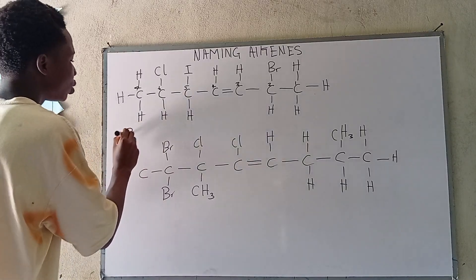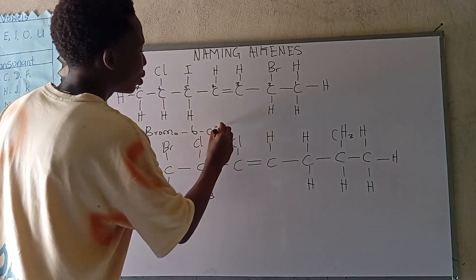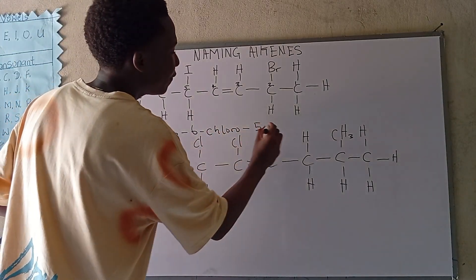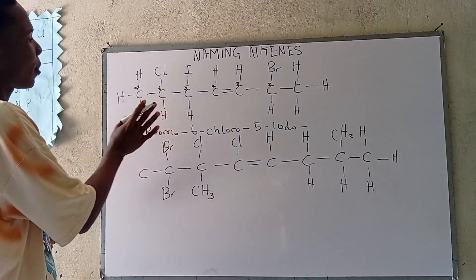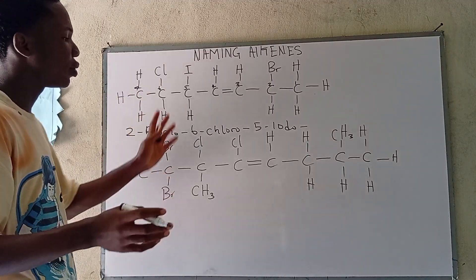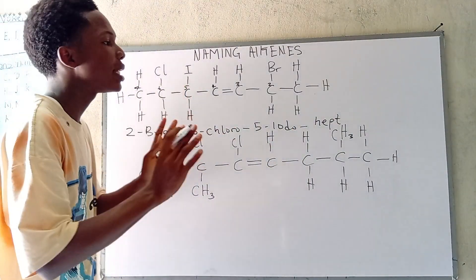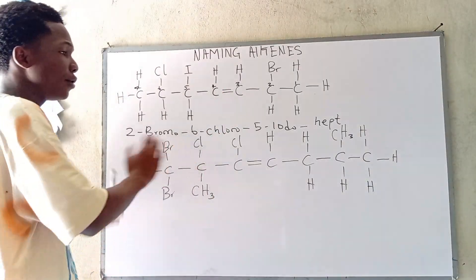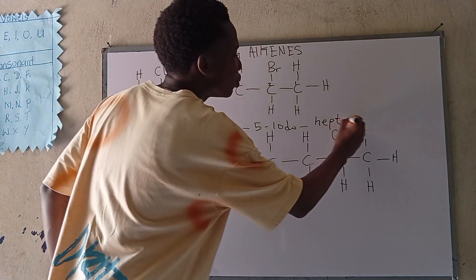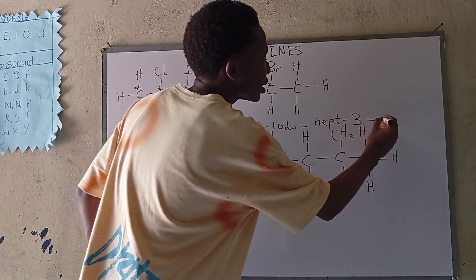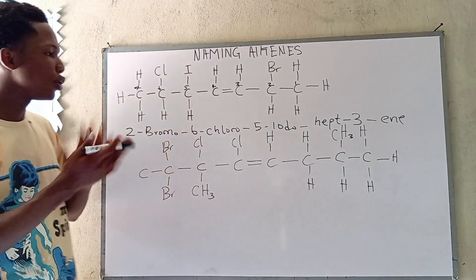We pick the position of bromo — we say 2-bromo. What's next? 2-bromo-6-chloro. Then 5-iodo. We've added our parent name. Now we must add the position of the double bond — don't skip it. If you just say heptene without the position you have failed. We add three, so it becomes 2-bromo-6-chloro-5-iodohept-3-ene. We have successfully named this compound.